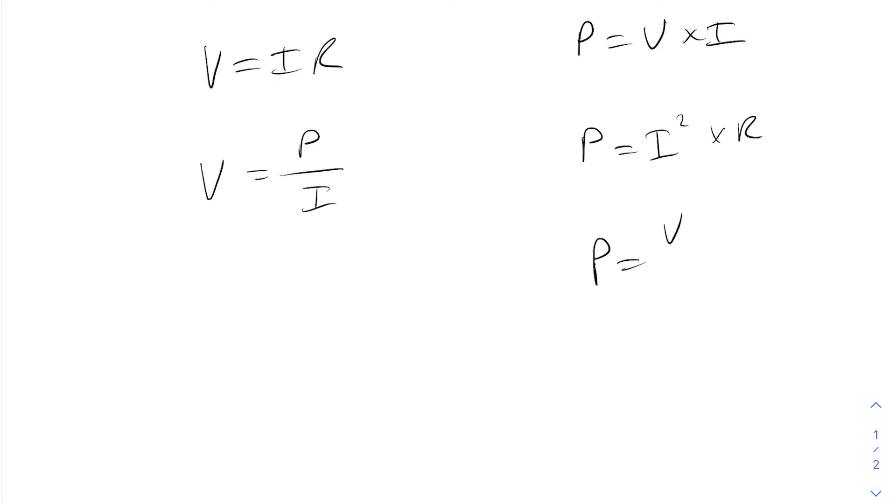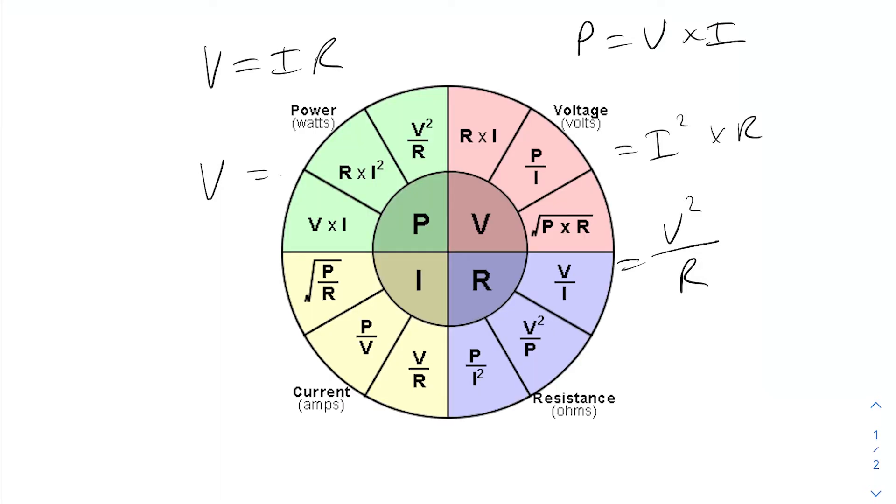This is all just basic algebra manipulation which you should be fairly comfortable with. Likewise, you can find the power by taking the voltage, squaring it, and then dividing it by the resistance, etc. So I'll show you on screen here, we have that circle where it has the power, amps, voltage, and ohms, and it tells you all the different calculations. Just get comfortable with that. As long as you know they exist, you don't really need to memorize them, you can always just Google it, right?